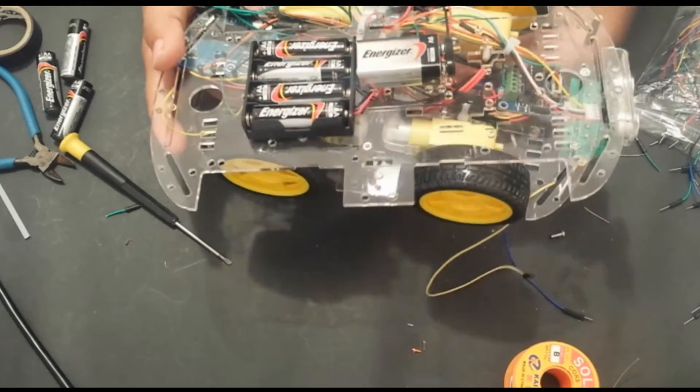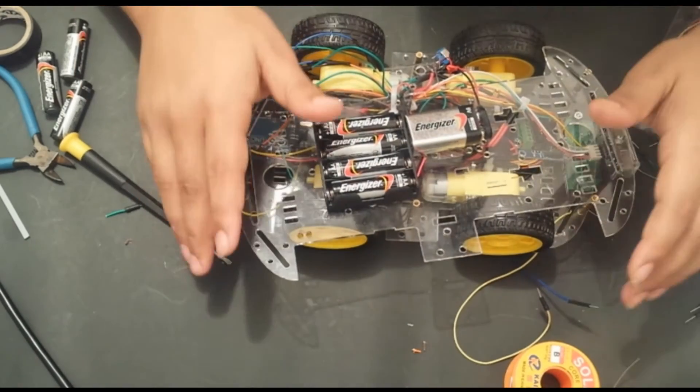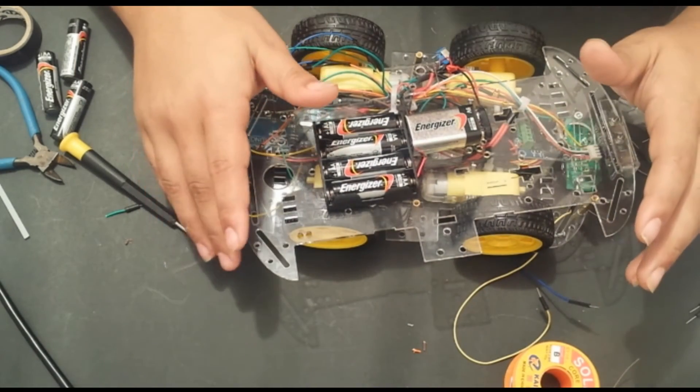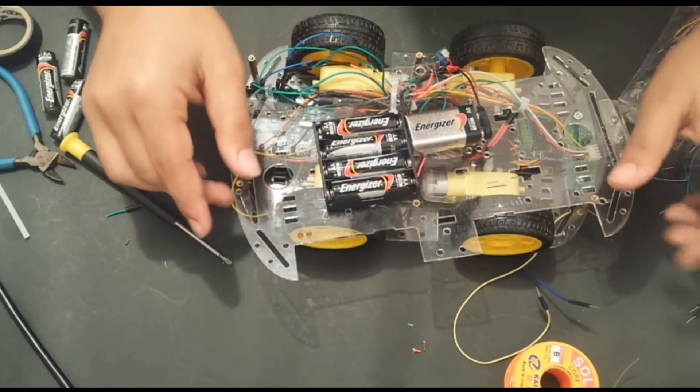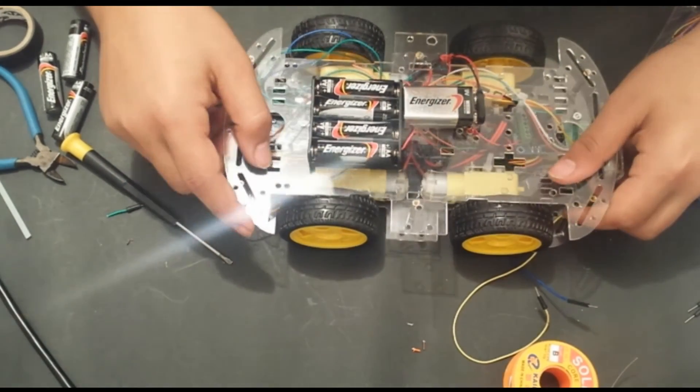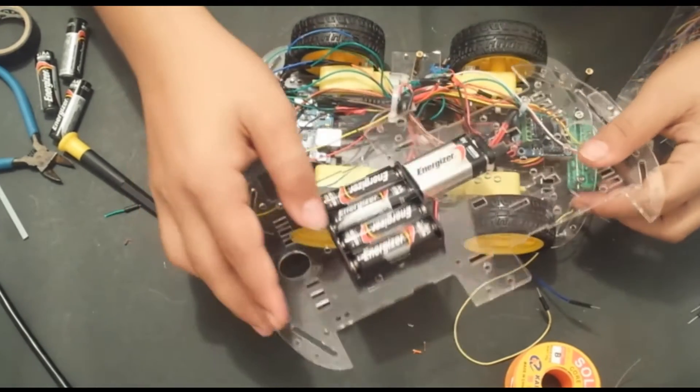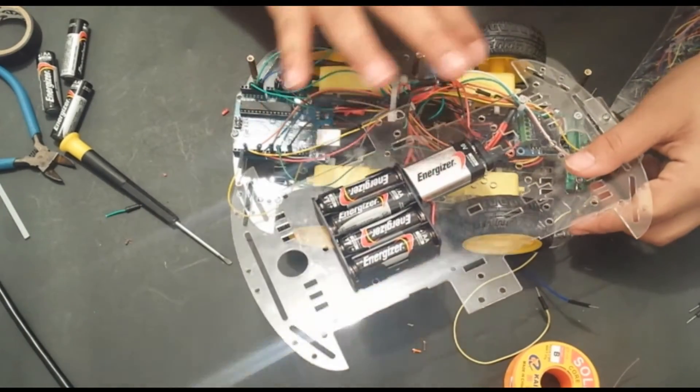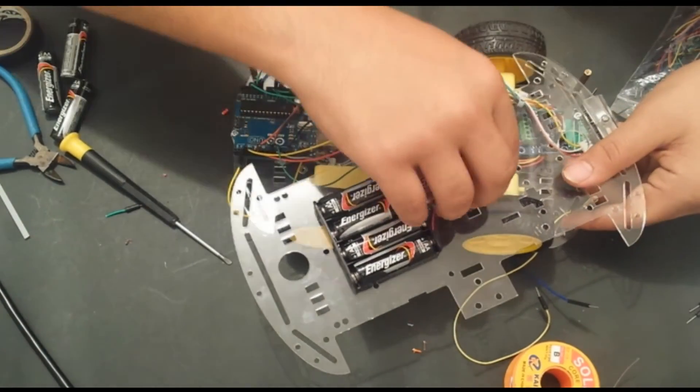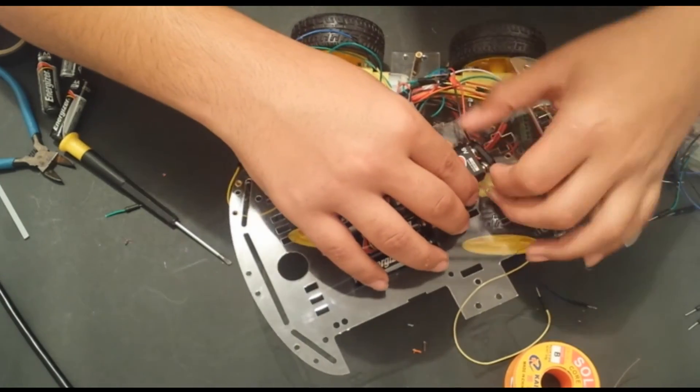Now let's move on to programming the line following so that this car will have obstacle avoidance and line following. But first I am going to put the top back on and I will clean up all of this wire mess and I will mount the H-bridge back in place.